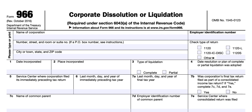You should file Form 966 within 30 days after the resolution or plan is adopted to dissolve the corporation or liquidate its stock. If the resolution or plan is amended or supplemented after Form 966 is filed, you should file another Form 966 within 30 days after the amendment or supplement is adopted. File Form 966 with the Internal Revenue Service Center at the address where the corporation or cooperative files its income tax return.